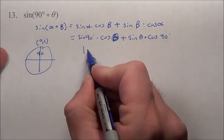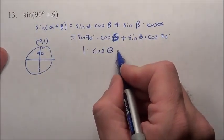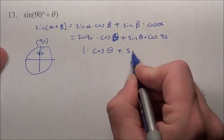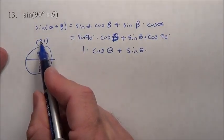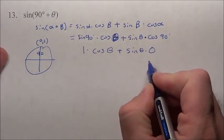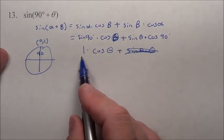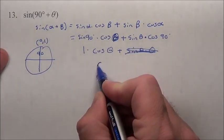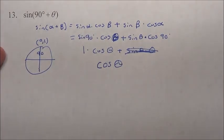So this is 1 times the cosine of this theta, which we don't know what it is. Plus the sine of theta times the cosine of 90. What's the cosine of 90? Zero. What's zero times anything? It goes away. So we're left with 1 times the cosine of theta, which just leaves me the answer. Cosine of theta.